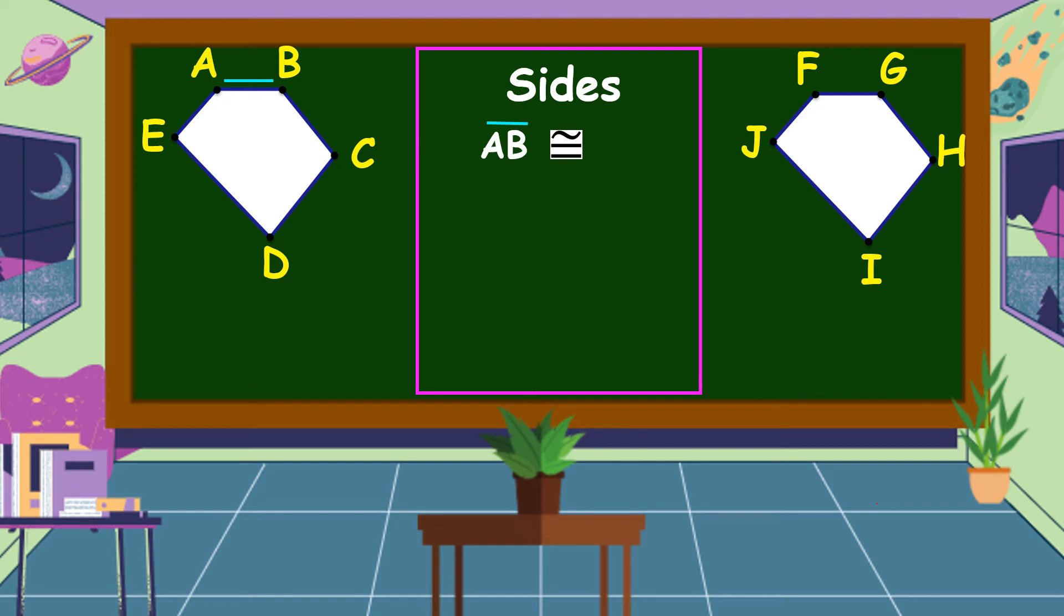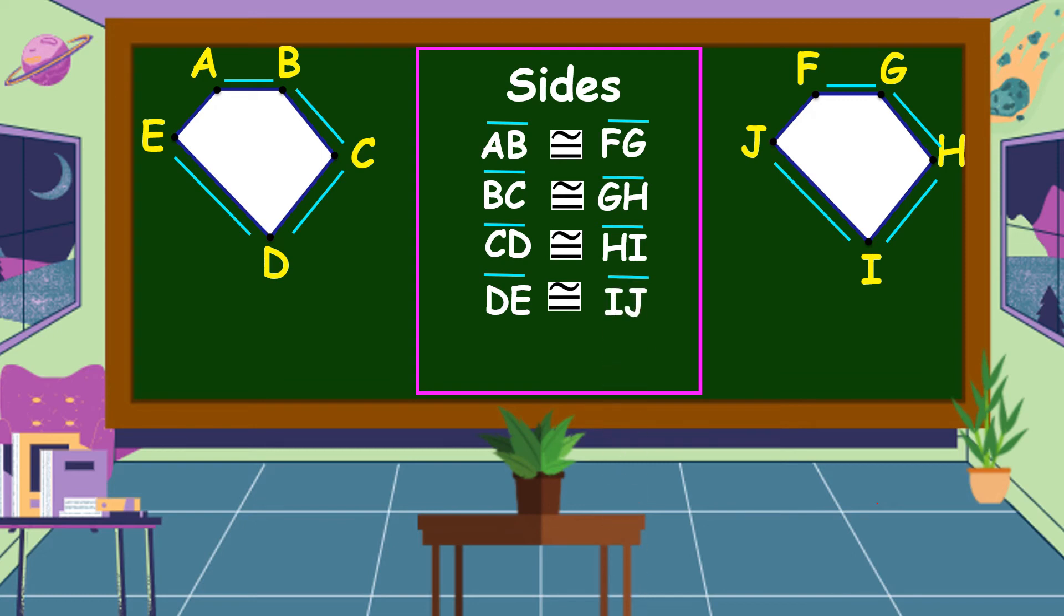Line segment BC is congruent to line segment GH. Line segment CD is congruent to line segment HI. Line segment DE is congruent to line segment IJ. Lastly, line segment AE is congruent to line segment FJ.